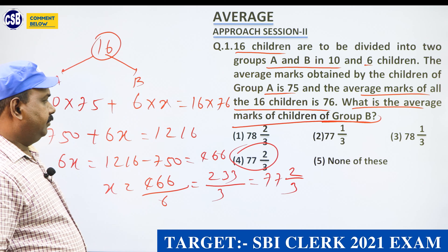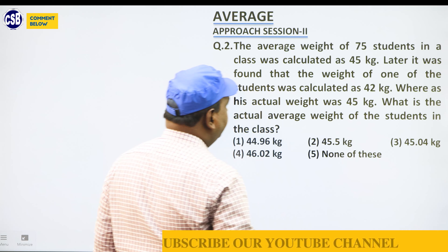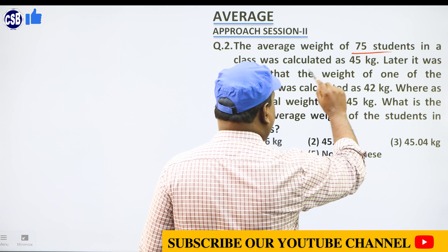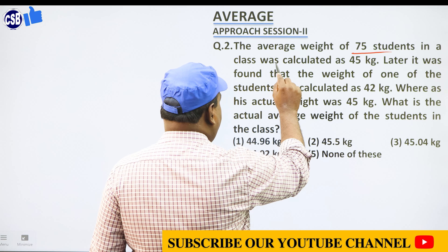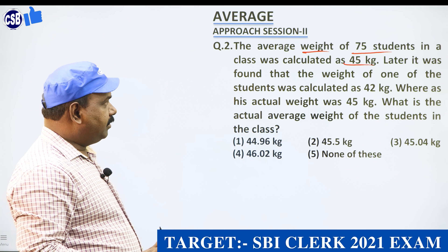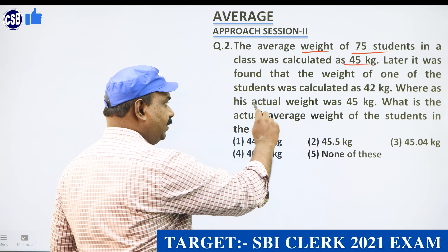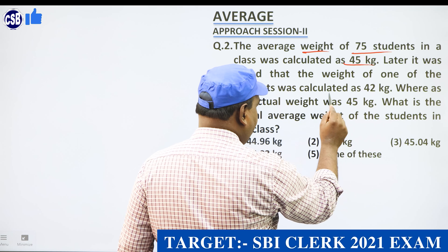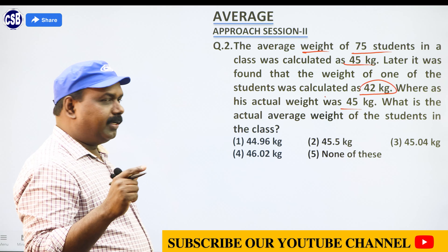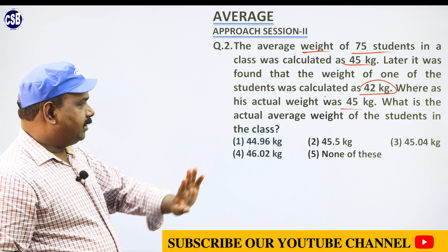Next problem: there are 75 children with average weight 45. For a class of 75 students, the average weight was calculated as 45. But later it was found that the weight of one student was recorded as 42 instead of the actual 45. Then what is the actual average weight of the students in the class?